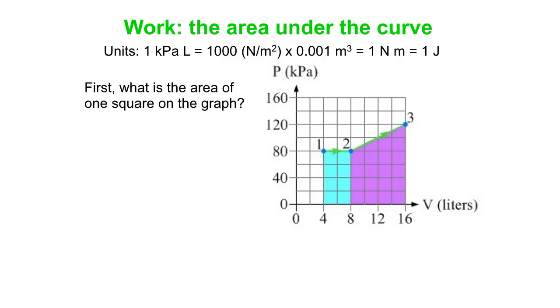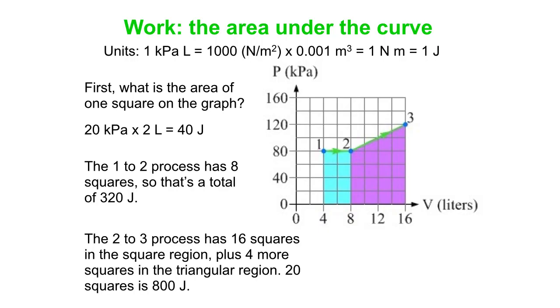So what's the area one square in the graph? Well, it's 40 kilopascal liters. In other words, 40 joules. So we see we've got 8 squares in the 1 to 2 process. 8 squares times 40 joules per square gets us 320 joules. The 2 to 3 process is 16 squares in the square region, and then 4 more in that triangular region. That's a net of 20 squares. That is 800 joules.